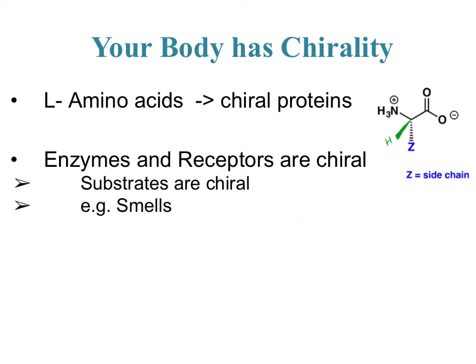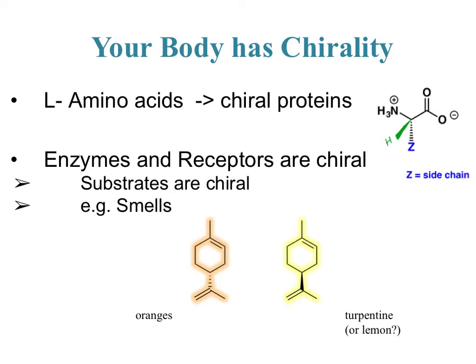An example of different chirality is for smells. The molecules shown are both called limonene — they have all the same connectivity and functional groups; the only difference is the chiral center at the bottom. In one case it's going back away from you, and in the other it's going towards you. For the structure on the left, that has a smell of oranges according to how it fits in your nose receptors. But the enantiomer on the right actually smells like turpentine, though some people think it smells like lemon.